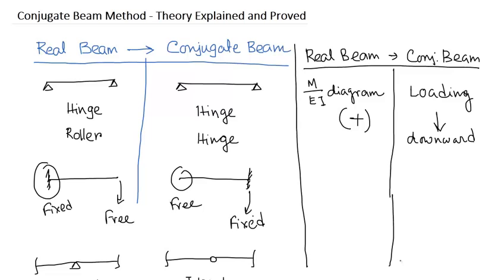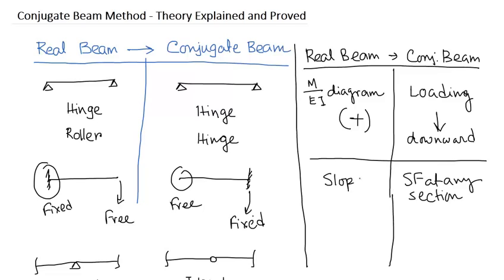Now, how do we calculate slope and deflection of the beam? By this theorem: the shear force at any section of the conjugate beam is the slope of the real beam at that section. The bending moment at any section of the conjugate beam is the deflection of the real beam. This is the basic theory of the conjugate beam method.